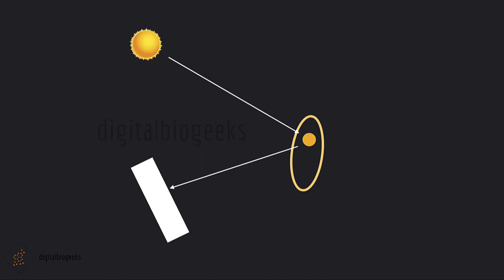Let's do another activity. Take a concave mirror and hold it facing the sun. Try to get the light reflected by the mirror onto a sheet of paper. Adjust the distance of the paper until we get a sharp bright spot on it. If we hold the sheet of paper steady for a few minutes, the paper will start burning due to the heat reflected from the sun. A concave mirror focuses the parallel sun rays at a point — this is why the paper burns. We can form an image on a screen here, so we call this a real image.